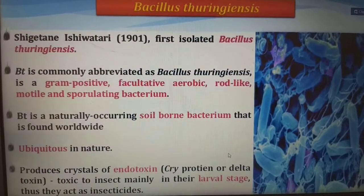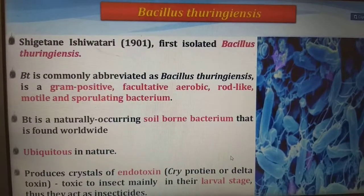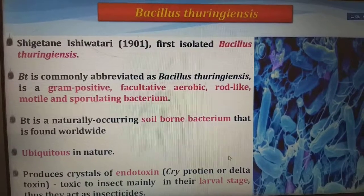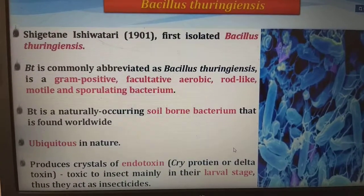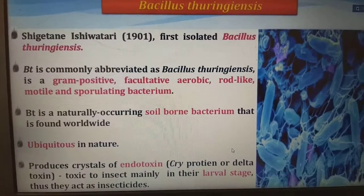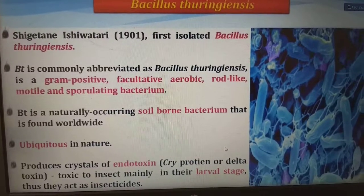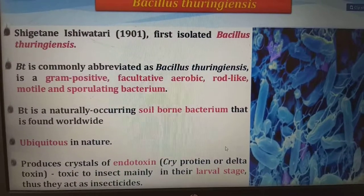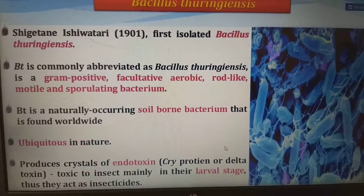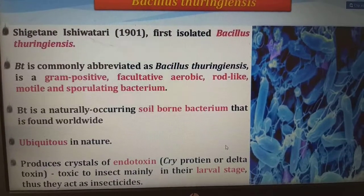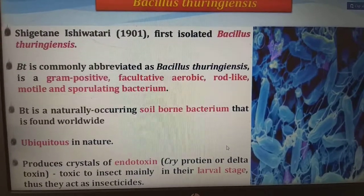Coming to the introduction, Bacillus thuringiensis — Bt — was first isolated by Sigatain Ishiwatari in the year 1901. Bt is a gram-positive, facultative, aerobic, rod-like, motile and sporulating bacterium. It is a naturally occurring soil-borne bacterium found worldwide — ubiquitous in nature. It produces crystals of endotoxin, also called cry protein or delta toxin, which is toxic to insects mainly at their larval stage. Thus they act as insecticides.